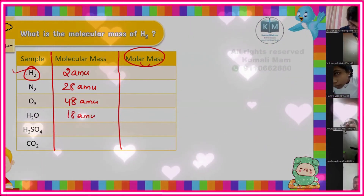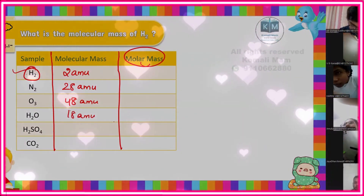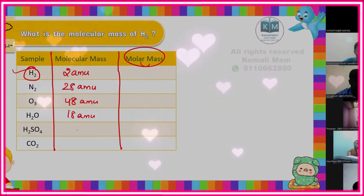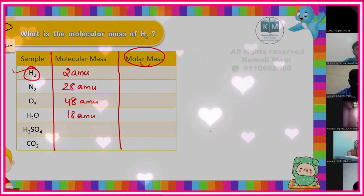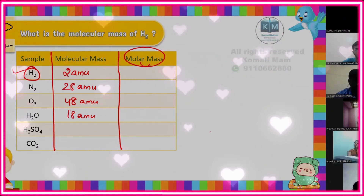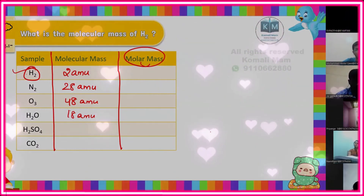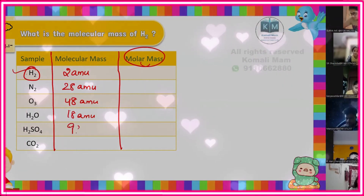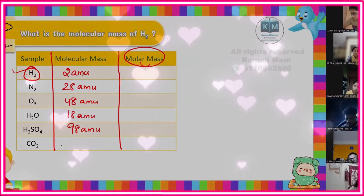In grams? Molar mass is 18 grams. Okay. H₂SO₄ — for you, tell me: 98 amu molecular mass, 98 grams molar mass. Super!